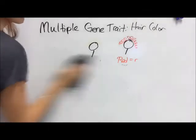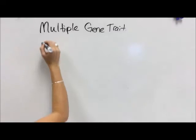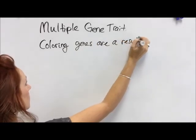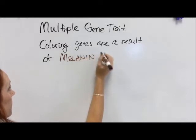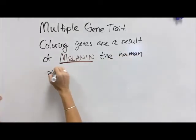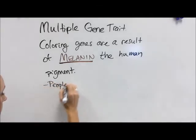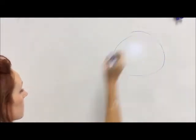It's pretty wild how these multiple gene traits work out, but this is how we get that complexity of human life. As far as coloring goes, I always like to throw in this lesson on human coloring, because it's been the source of a lot of discrimination for a lot of years. Coloring genes are a result of a pigment called melanin — that melanin is basically the human color. The more pigment you have, the darker your skin, hair, and eyes will be.